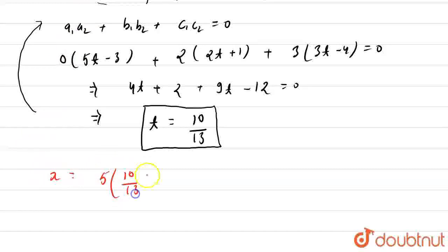So we have x = 5(10/13) - 3, y = 2(10/13) + 1, and z = 3(10/13) - 4.